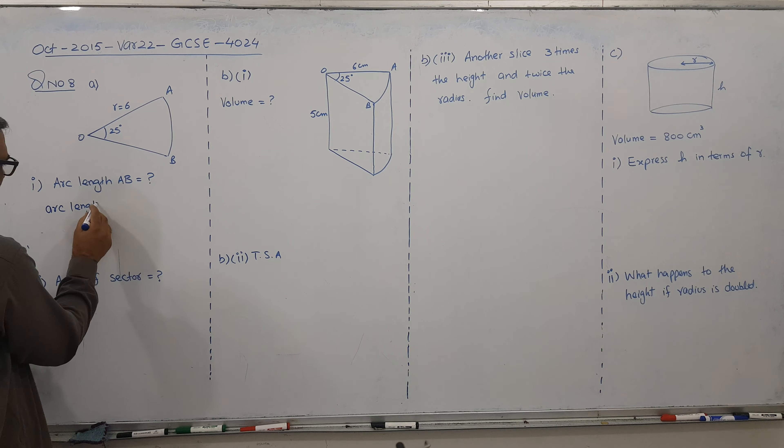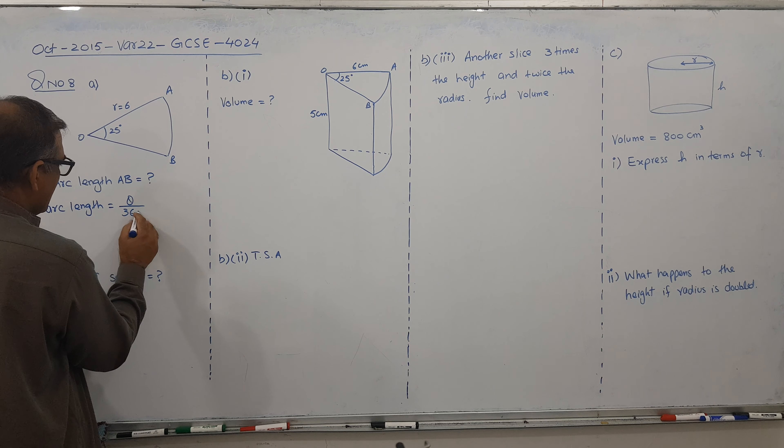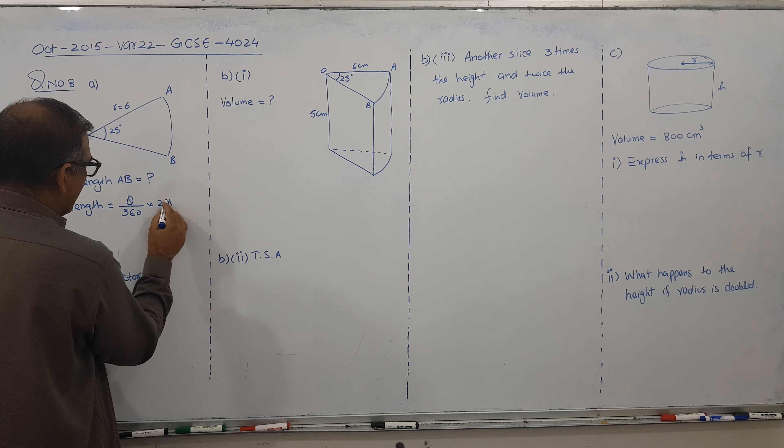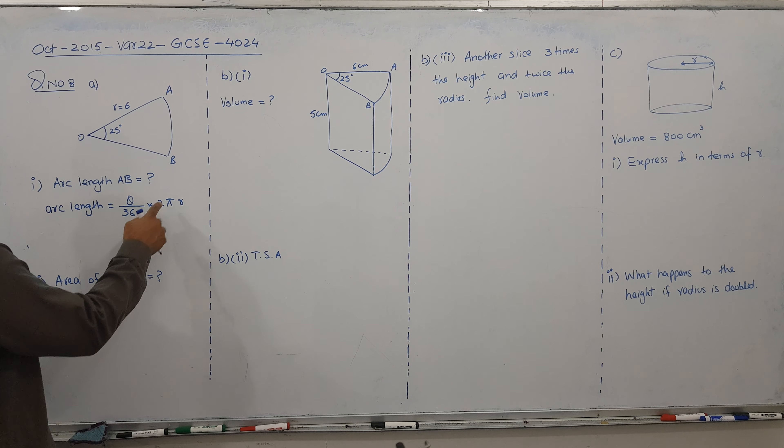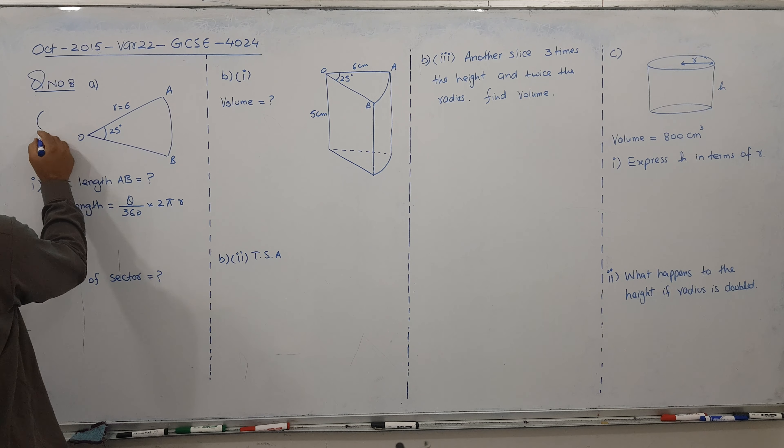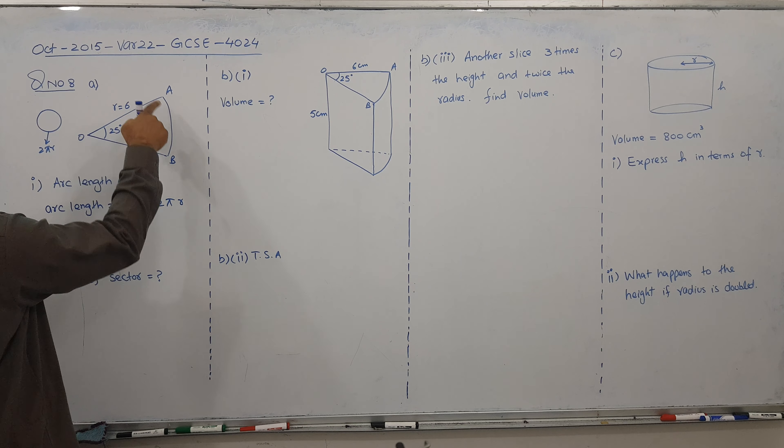So arc length formula is theta by 360 into 2 pi r. And because it's linked with a circumference. All of you familiar, the circumference is 2 pi r. That is why it's linked with the arc length.